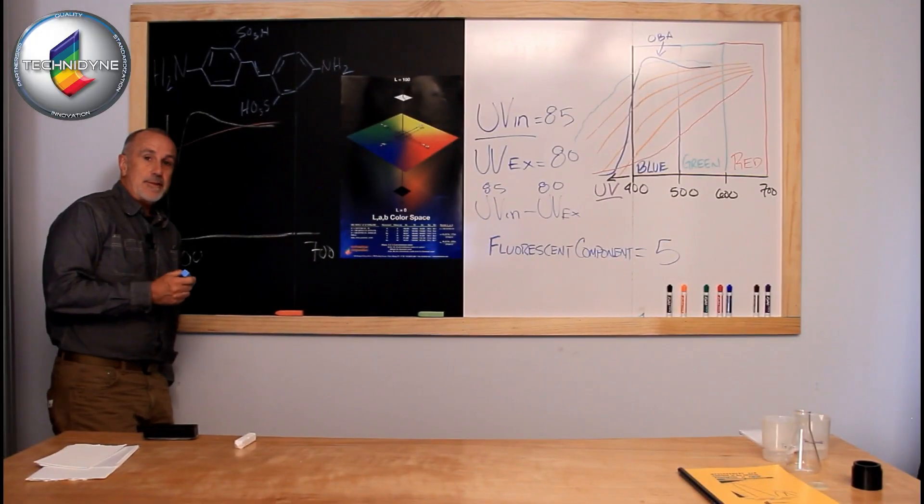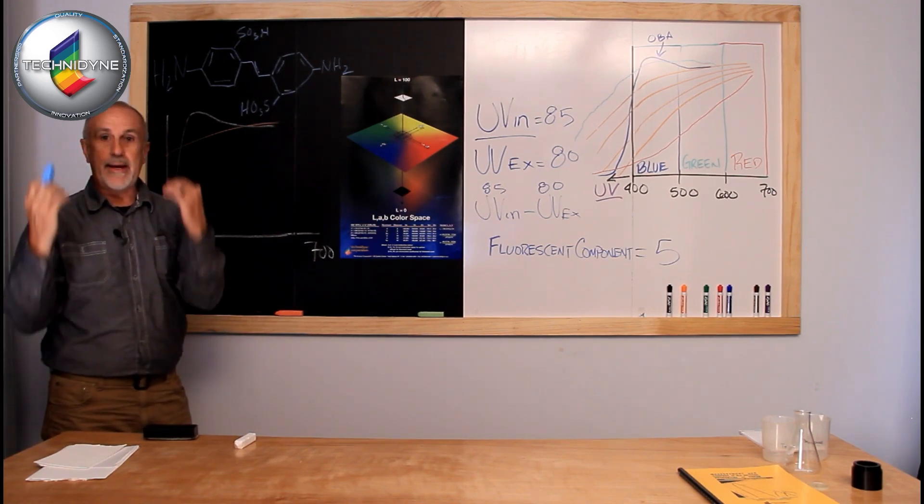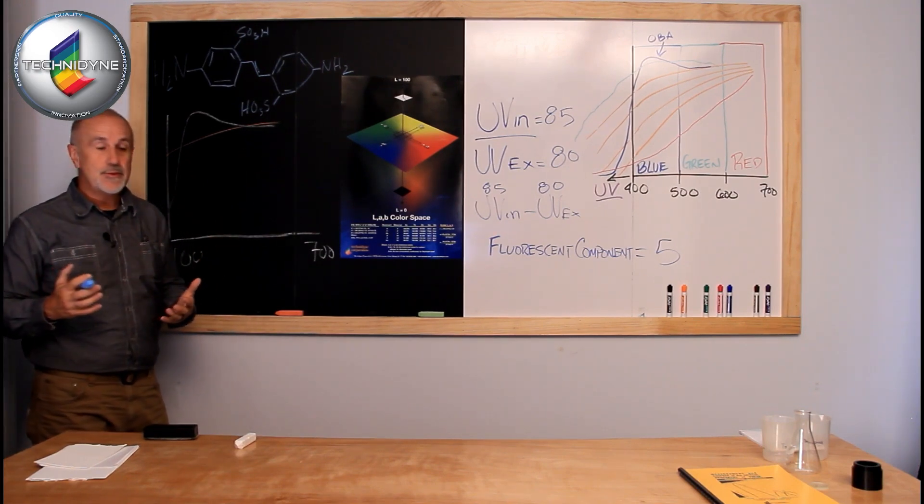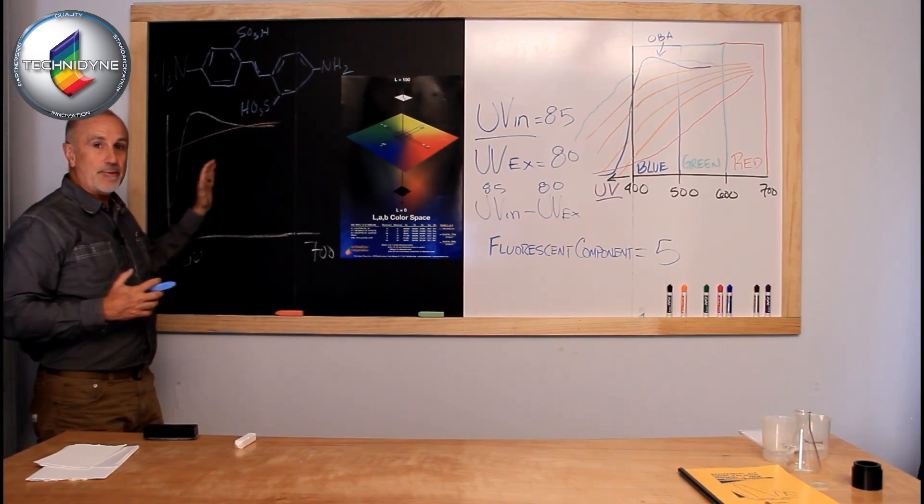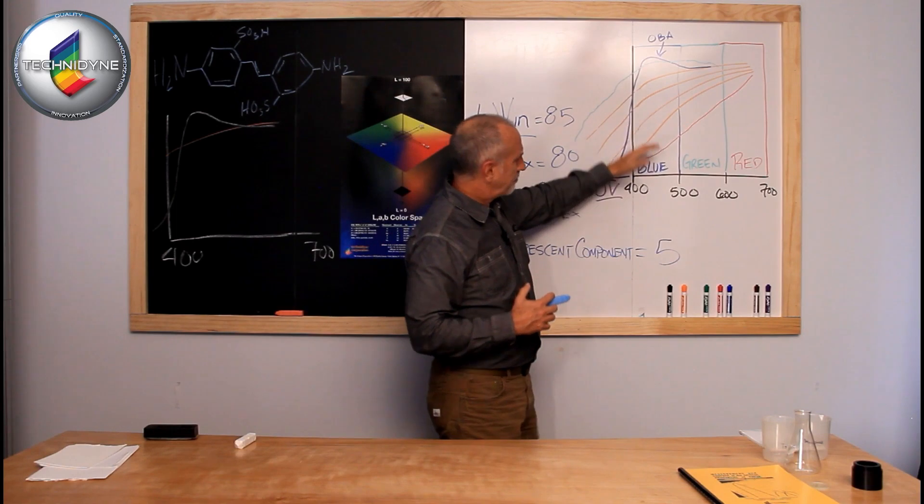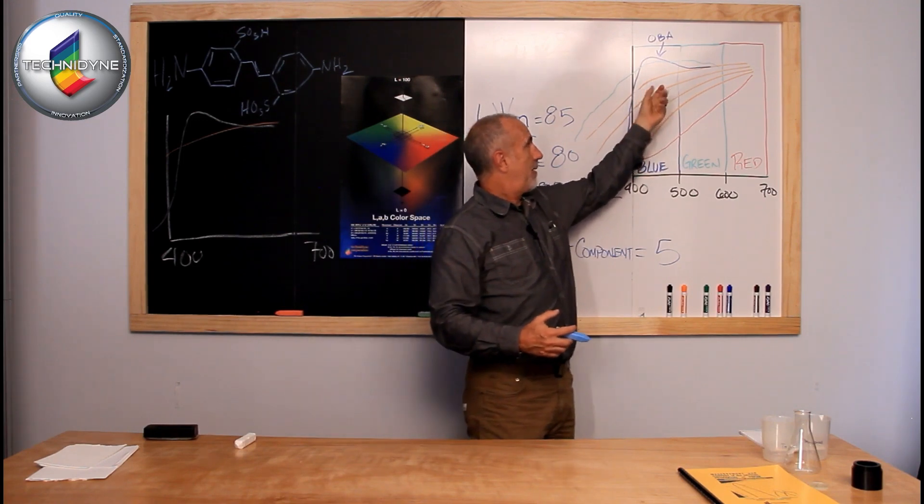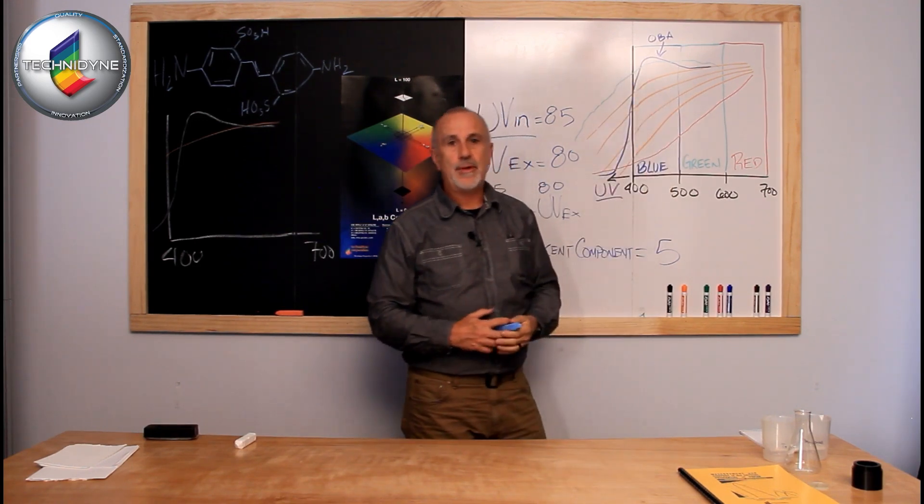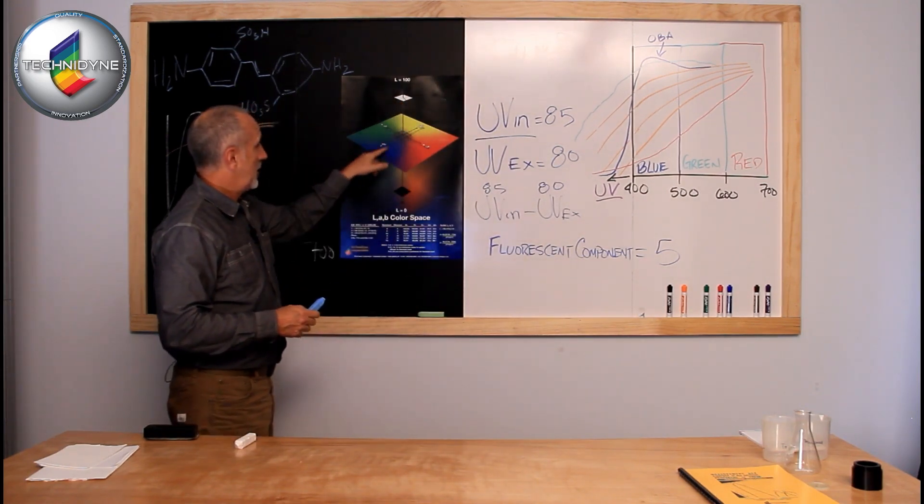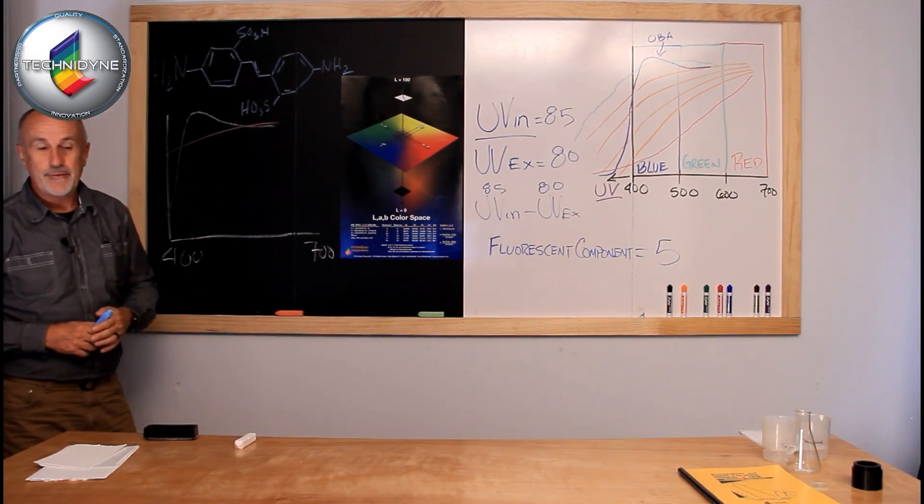Now dyes by definition absorb light. Dyes are going to take light out of the equation. Depending upon the color of dye that I use, I'm going to change that spectral energy across from 400 to 700 nanometers. As we talked about, because we're measuring brightness and the whiteness calculations reward blue whites, the most detrimental thing to a bright sheet or a white sheet is yellow. Yellow is the absence of blue, and so things that drive the sample yellow are going to kill brightness and whiteness.